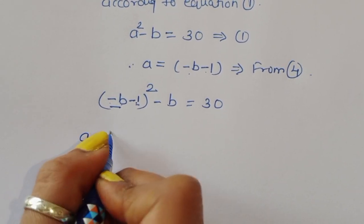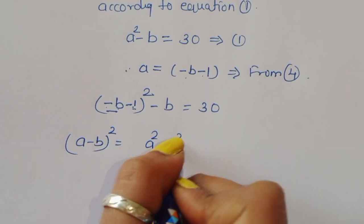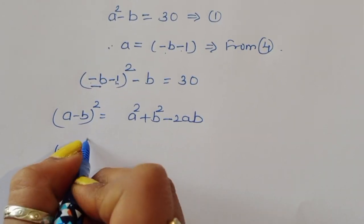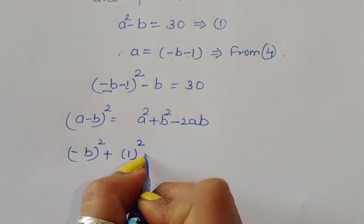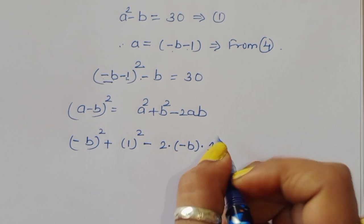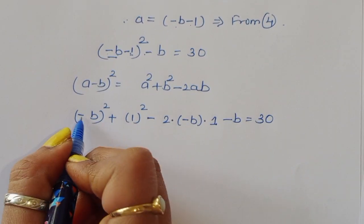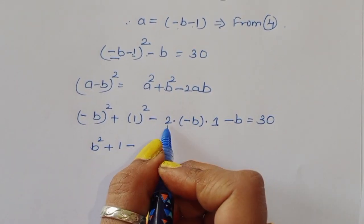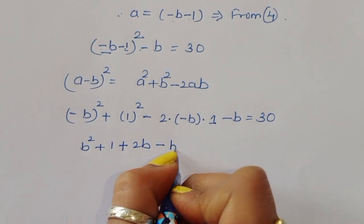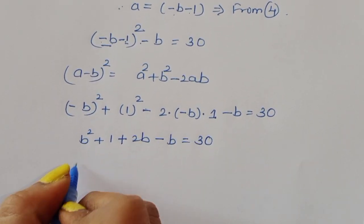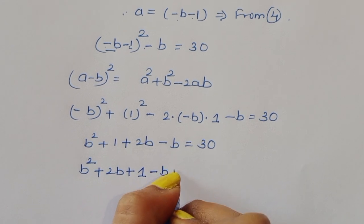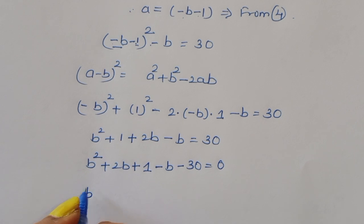Expanding (minus b minus 1) squared using the formula (a minus b)² = a² + b² - 2ab: we get b squared plus 1 plus 2b minus b equals 30. So b squared plus 2b plus 1 minus 30 equals 0.